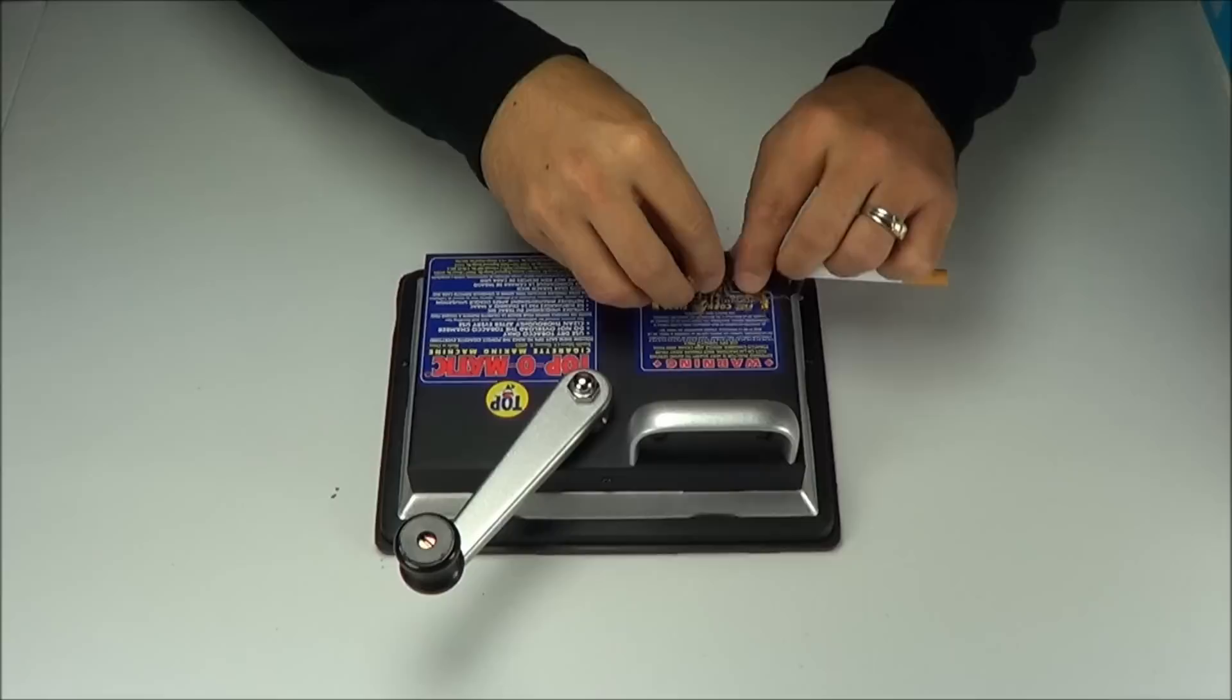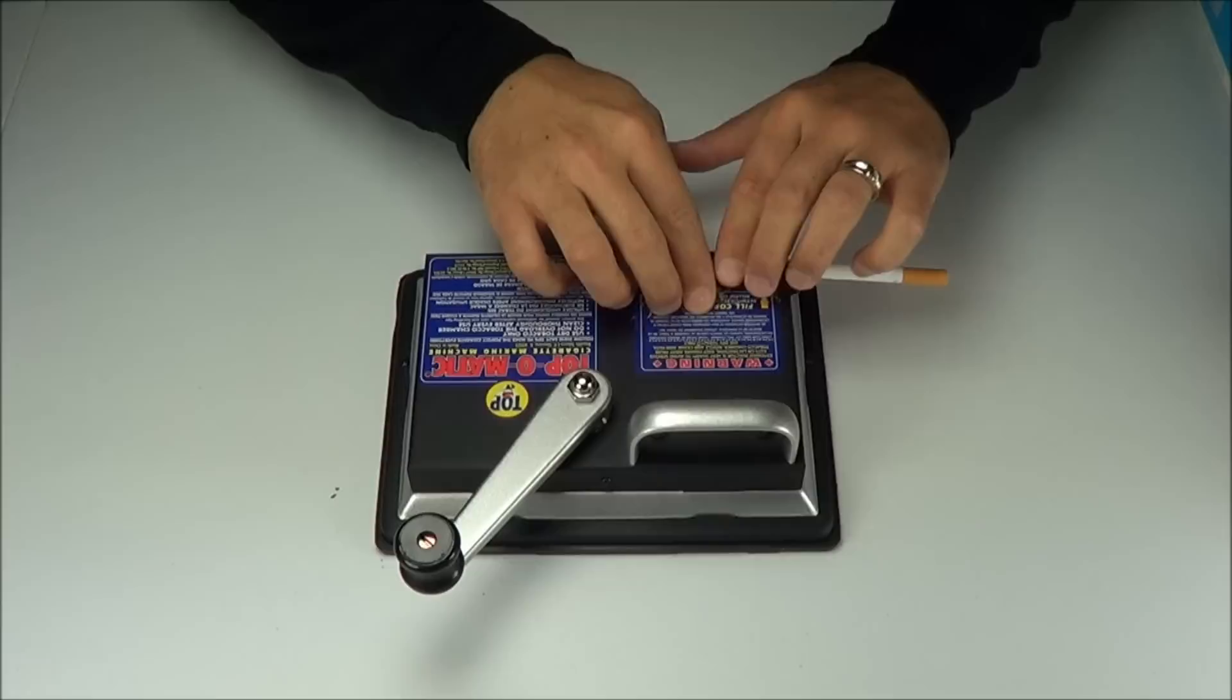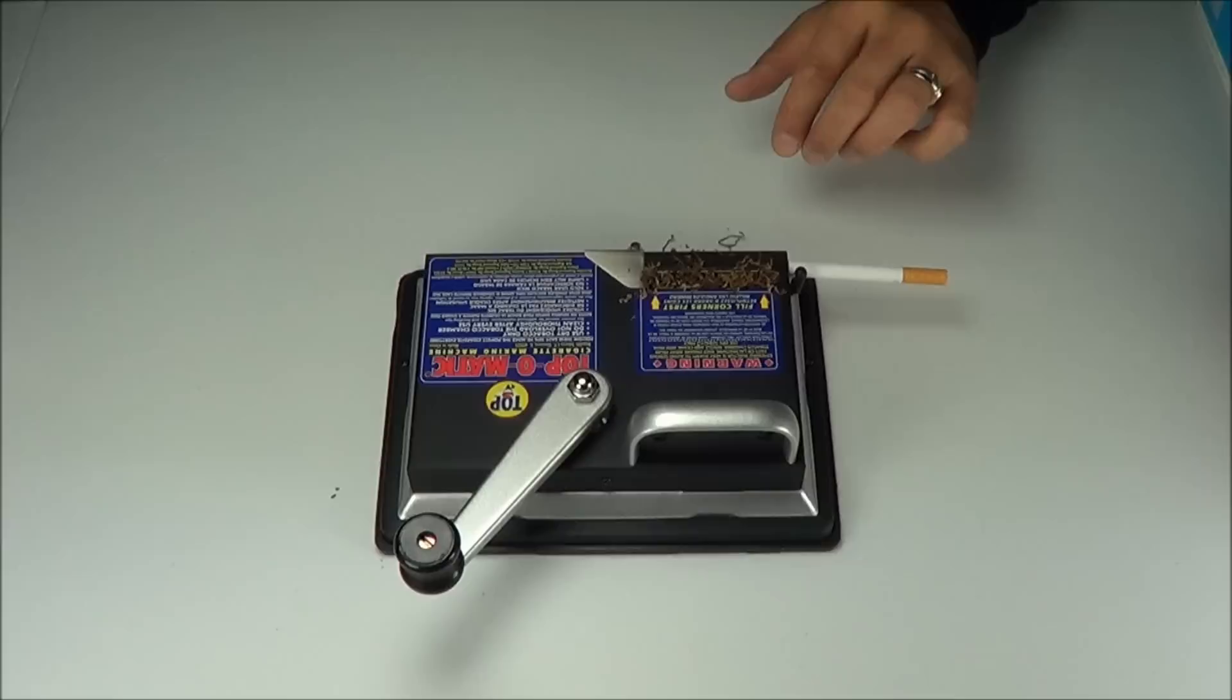You get some tobacco and put it in this chamber. Now you want to fill the corners up first, so as you put it in there just kind of slide it out a little bit like so, and then evenly fill the chamber. You don't want to overfill these machines.